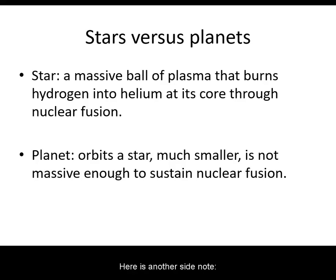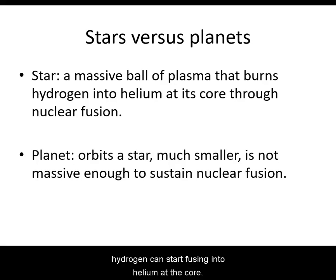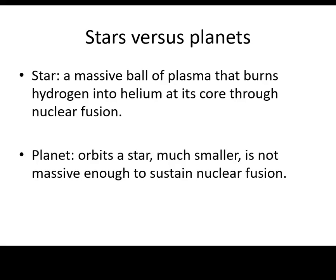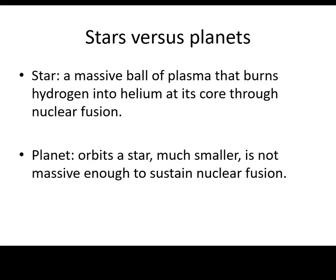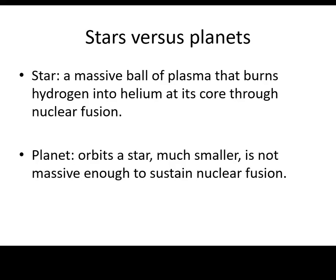Here is another side note. If sufficient pressure and temperature build up, hydrogen can start fusing into helium at the core — that would make the object a main sequence star. Our giant planets, however, are far less massive. It would take about 80 times the mass of Jupiter for nuclear fusion to be ignited.